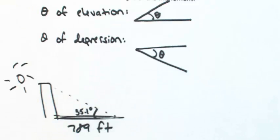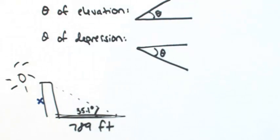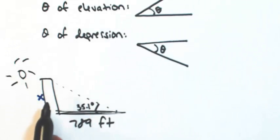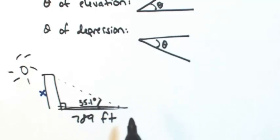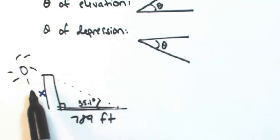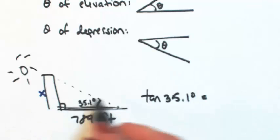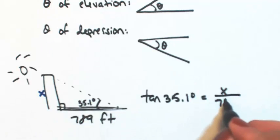So we want to find the height of the monument. Let me call that x. Using the fact that the monument and the ground is perpendicular, we have a right triangle. Let's figure out which trig function will relate the opposite with the adjacent. That's our tangent. So the tangent of 35.1 degrees is opposite over adjacent.